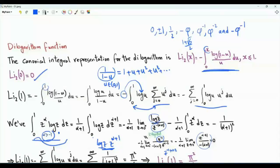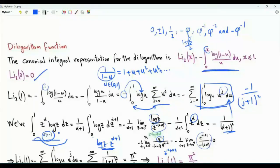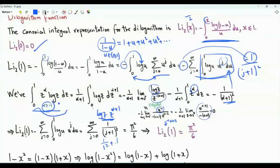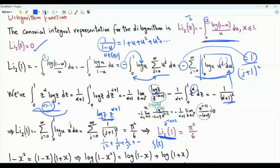Thus this integral equals minus one over (alpha plus one) squared. Applying this result term by term, the integral is minus one over (j plus one) squared. The dilogarithm evaluated at one equals the sum from j equals zero to infinity of one over (j plus one) squared, which is the sum of reciprocals of squares of positive integers — that is zeta of two, which equals pi squared over six.